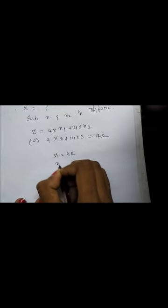Now we have the values of x1 and x2. The remaining work is to find z. Substituting x1 and x2 into the objective function: z equals 4 times x1 plus 14 times x2, that is 4 times 0 plus 14 times 3, giving z equals 42. So the optimal solution is z equals 42, x1 equals 0, and x2 equals 3. Thank you for watching.